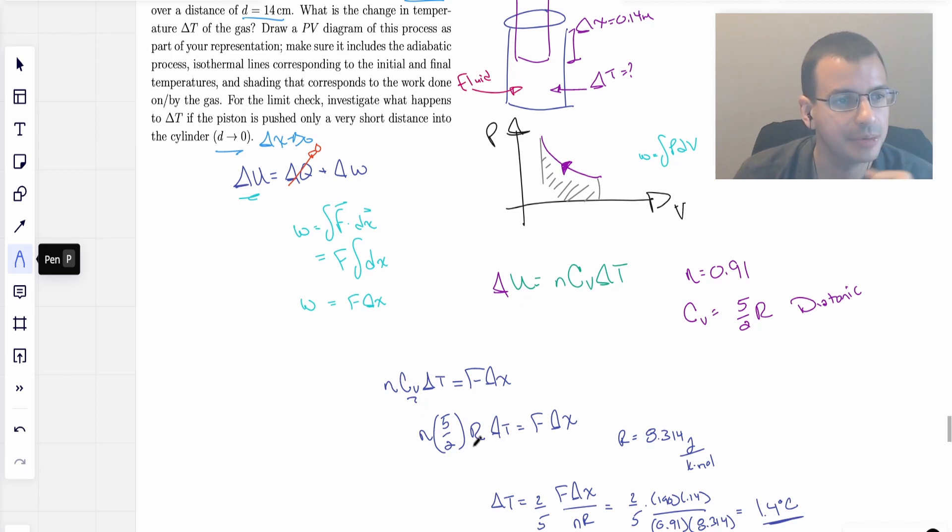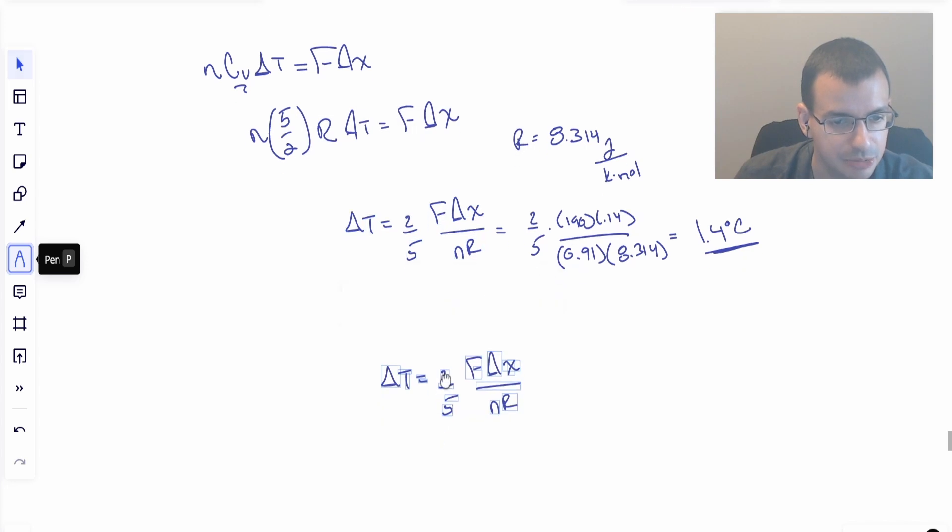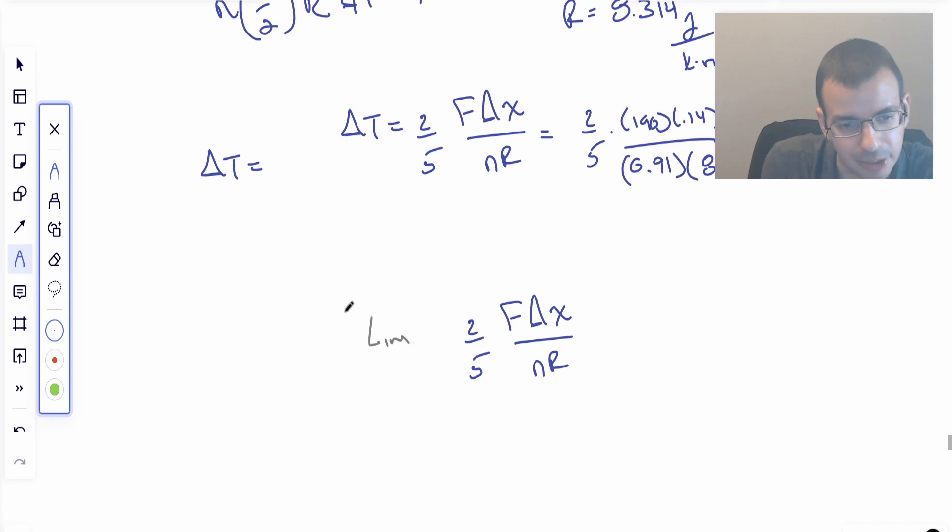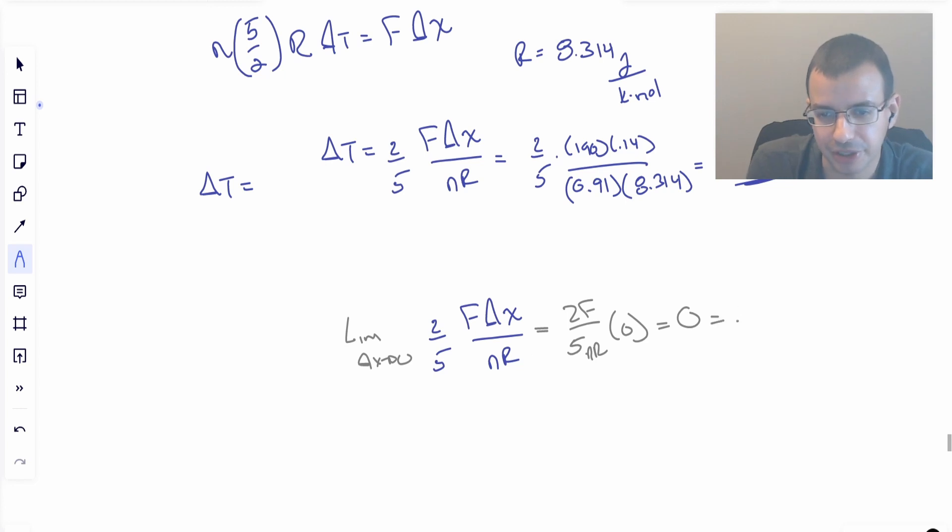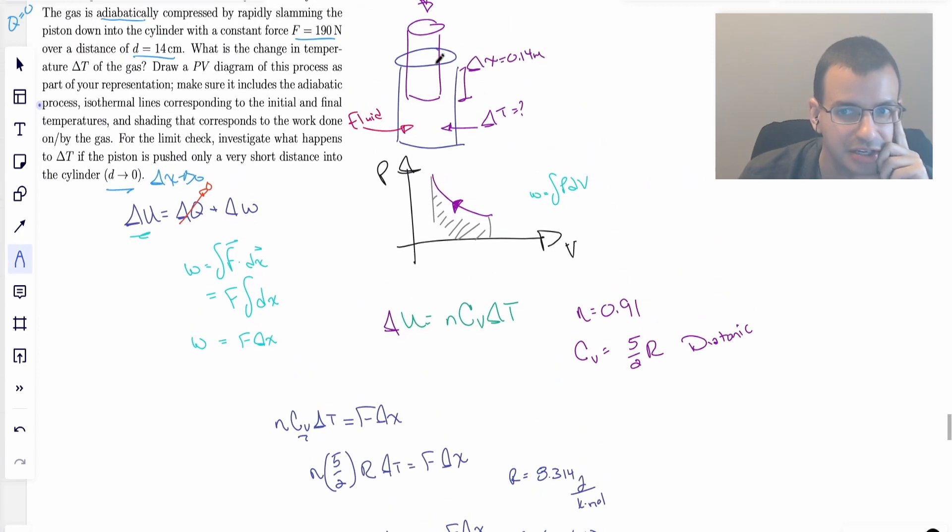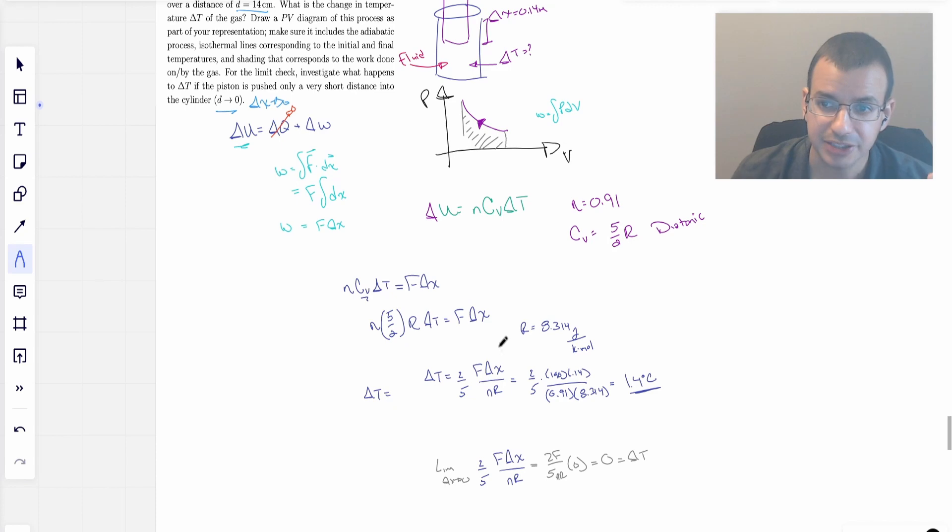For the limit check, investigate what happens as delta X goes to zero. Looking at this equation, the limit as delta X approaches zero becomes 2F over 5NR times zero, which is zero, and therefore that equals delta T. It's basically saying that if we're pushing down this piston but it doesn't move, the temperature is not going to change, which seems reasonable as well.